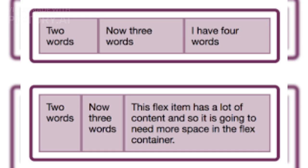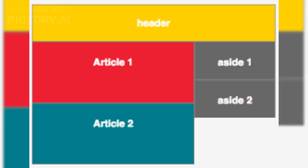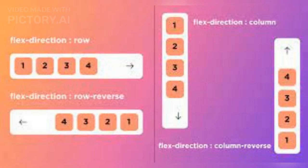Here are some key features of CSS Grid. First, Grid Container: the parent element which contains all the grid items. Second, Grid Item: the children of the grid container that are placed within the grid.